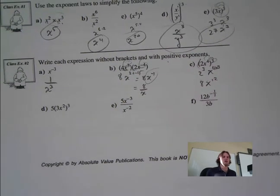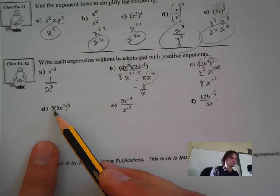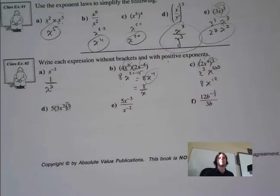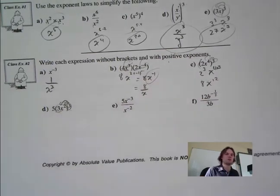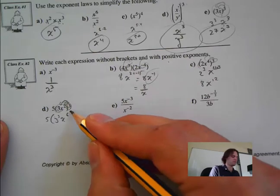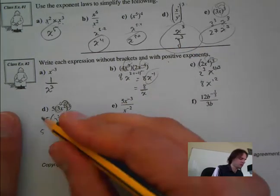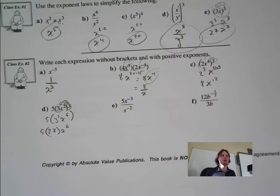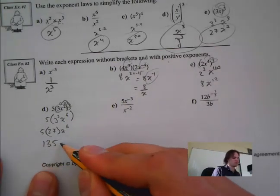For part D, this exponent 3 must go into everything. Following order of operations, we deal with the exponent first — distributing the 3 into both factors. There's an imaginary 1 on x, giving 5 times 3 to the 3 times x to the 6. Since 3 cubed is 27, and 5 times 27 is 135, the answer is 135x to the 6.